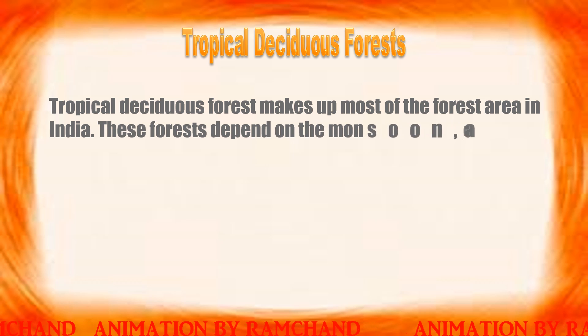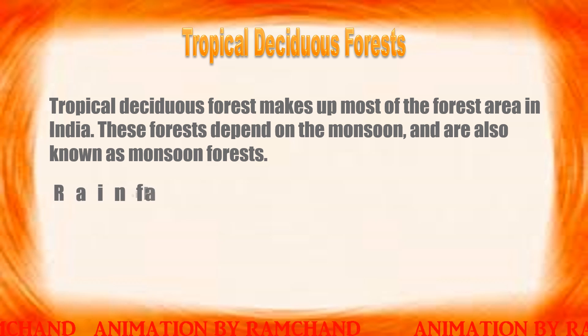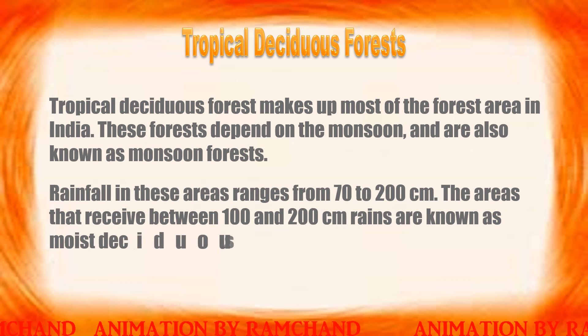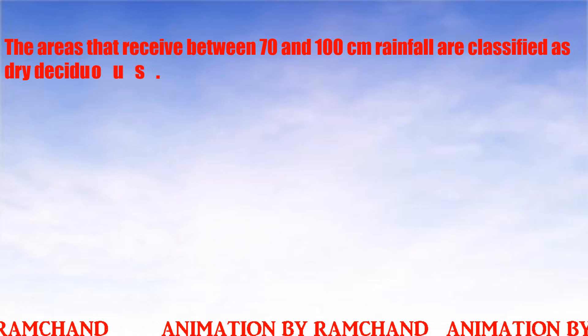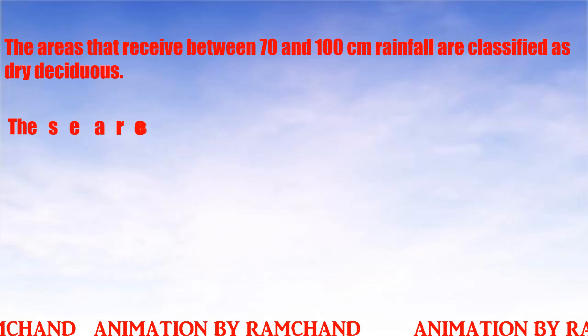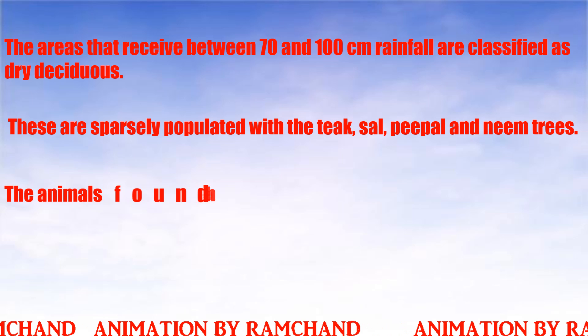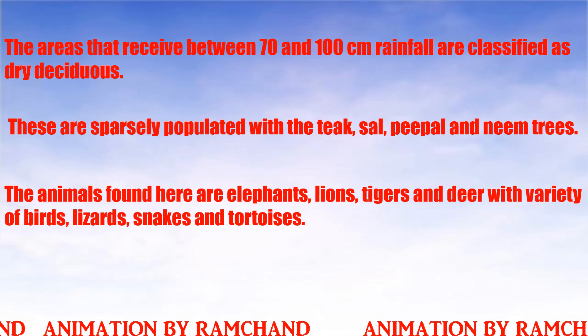Tropical deciduous forests make up most of the forest area in India. These forests depend on the monsoon and are also known as monsoon forests, with rainfall ranging from 70 to 200 centimeters. Areas receiving 100 to 200 centimeters are moist deciduous, while areas receiving 70 to 100 centimeters are dry deciduous forests. Main trees are teak, sal, peepal, and neem. Animals found here include elephants, lions, tigers, deer, birds, lizards, snakes, and tortoises.